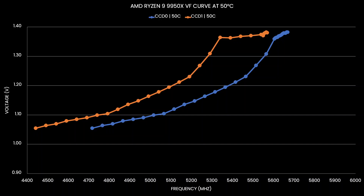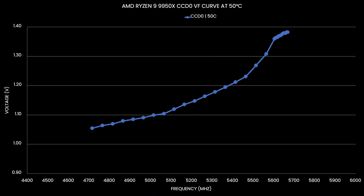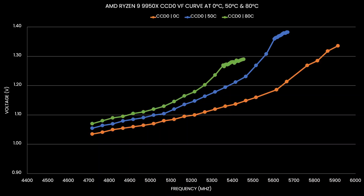It's not easy to visualize a VFT curve because of its three dimensions — voltage, frequency, and temperature. So let's start with a VF curve at a fixed temperature and then change the temperature to see how the VF curve behaves. Here's the default voltage-frequency curve of a Ryzen 9 9950X processor at an operating temperature of 50 degrees Celsius. Since the processor has two CCDs of quite different quality, we have two distinct curves. For simplicity, let's focus on the CCD0 curve and compare the VF curves at 0 and 80 degrees Celsius.